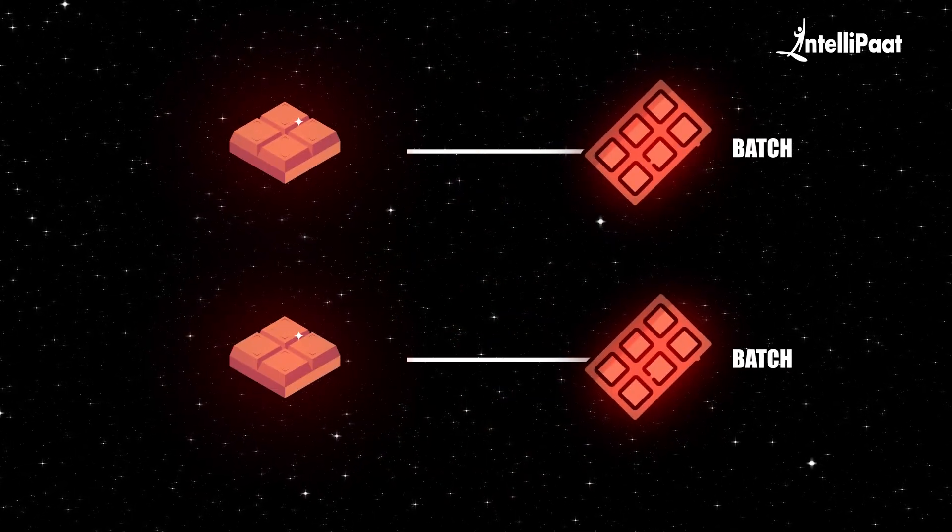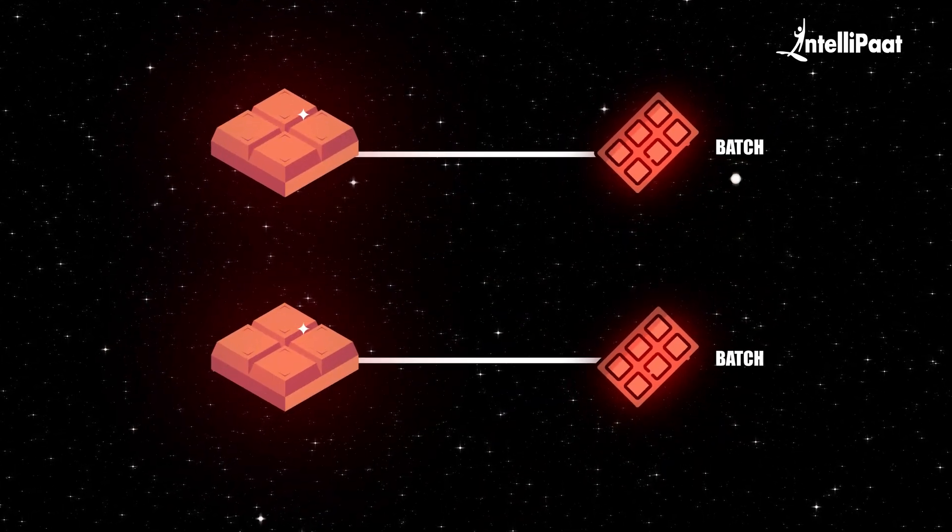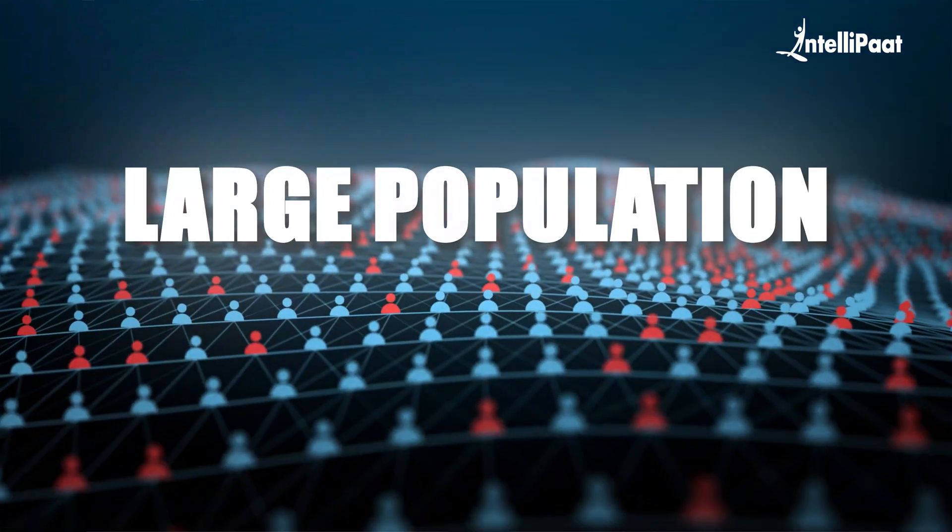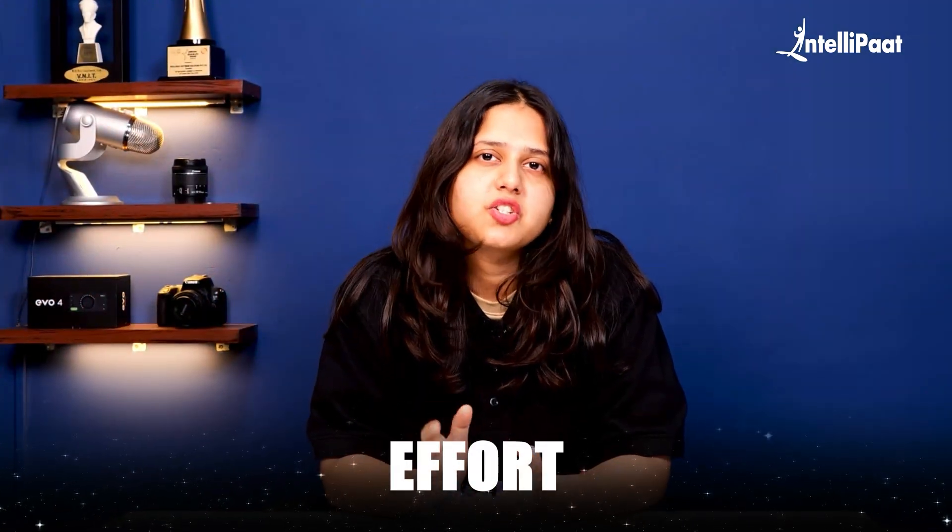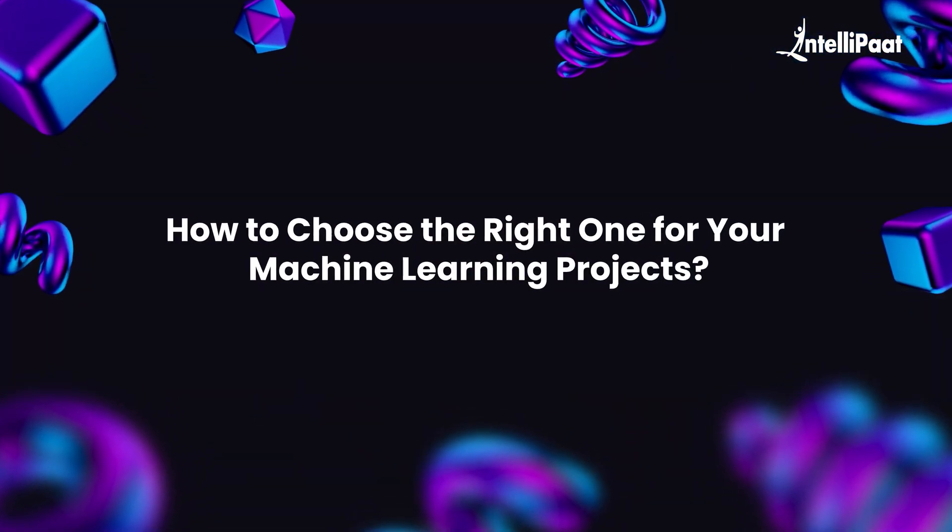You don't need to taste every single chocolate to know if the batch is good. Instead, you take a few chocolates from different parts of the batch. This small selection represents the whole. If those samples taste great, chances are the rest of the batch does too. Sampling works the same way in machine learning. It helps us draw conclusions about a large population by analyzing just a subset, saving time and effort while ensuring accuracy. In this video, we'll explore the various sampling techniques and how to choose the right one for your machine learning projects. So, without wasting any time, let's dive in.